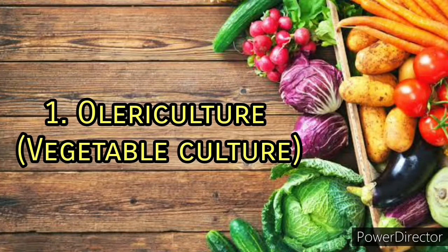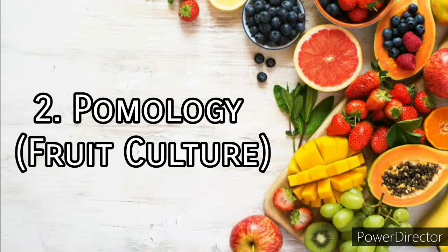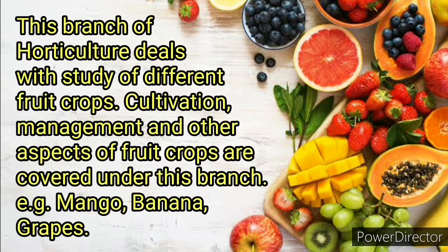The first branch is olericulture, also known as vegetable culture. This branch deals with the study of vegetable crops. Vegetables are nutritive foods of plant origin which are normally cooked before consumption or eaten raw as salad. Examples include cabbage, tomato, and fenugreek. The next branch is pomology, also known as fruit culture, which deals with the study of different fruit crops — cultivation and management of various aspects of fruit crops.